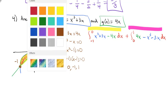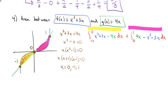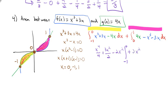Now we evaluate those integrals. The first part integrates to x to the fourth divided by 4 plus 3x squared divided by 2 minus 2x squared, integrated from negative 1 to 0. For the second half, we get 2x squared minus x to the fourth divided by 4 minus 3x squared divided by 2, integrated from 0 to 1.